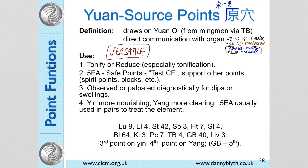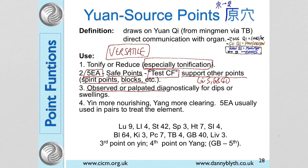Yuan source points are very versatile. The Yin points are the most common points for tonification. In five element acupuncture these are regarded as very safe points, so they are the first points used to test a CF. They usually come in pairs to treat the element. They also support other points — if we are doing a spirit point, entry-exit block, or any sort of block, we often support with the source points at the end of treatment.